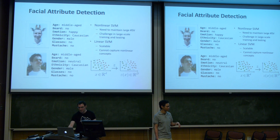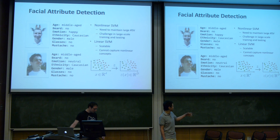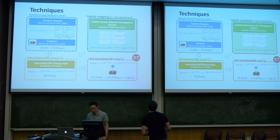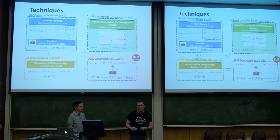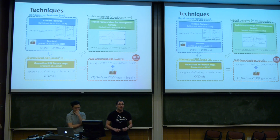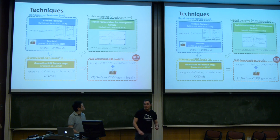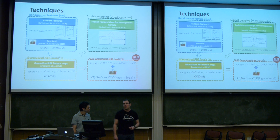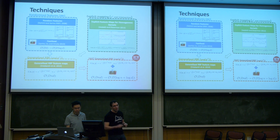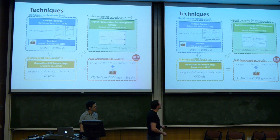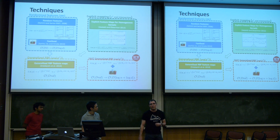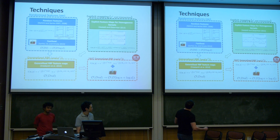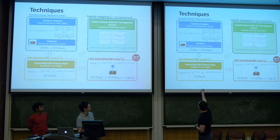Instead of using implicit feature mapping such as traditional kernel methods, we aim to find an explicit feature mapping Z such that after the mapping the data is more easily separable. We tried different techniques, starting from random features for translation-invariant kernels, proposed by Rahimi in 2007 — essentially a Monte Carlo approximation of the kernel using the inverse Fourier transform. We also tried the fast version proposed by Sarlos, Lee, and Smola, which reduces computational time from linear to logarithmic. Then we tried explicit feature mapping for homogeneous kernels such as chi-square and intersection, which works by making the kernel periodic so that the spectrum becomes discrete, enabling an explicit feature mapping.